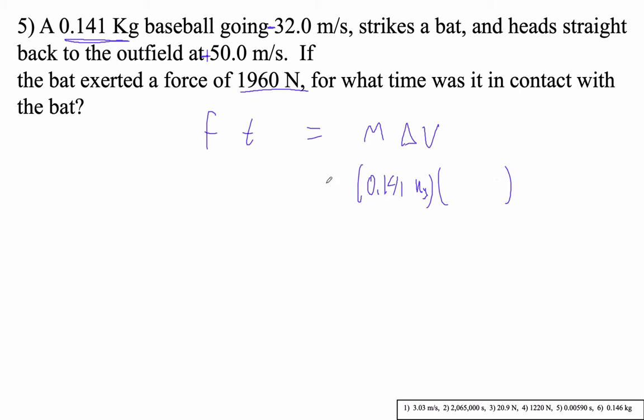Delta V though is tricky. Let's think about that. Our delta V is that it goes from negative 32 to positive 50 meters per second. So our delta V in this case is positive 82 meters per second. That's just 32 plus 50.